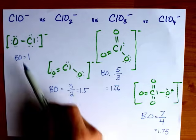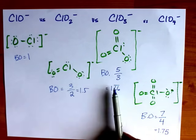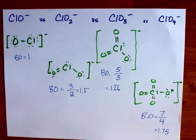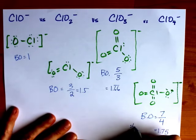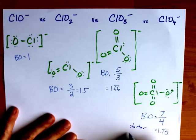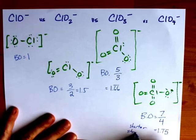Okay, so 1, 1.5, 1.66, and 1.75. The higher the bond order, the shorter the bonds, and the stronger the bonds.